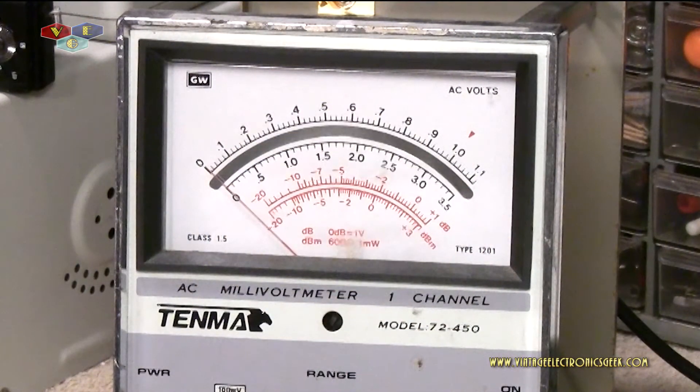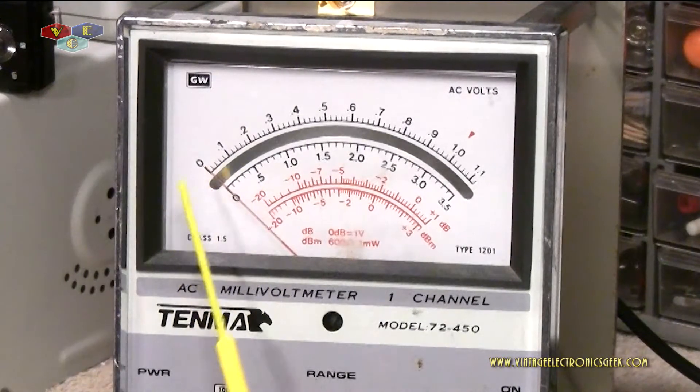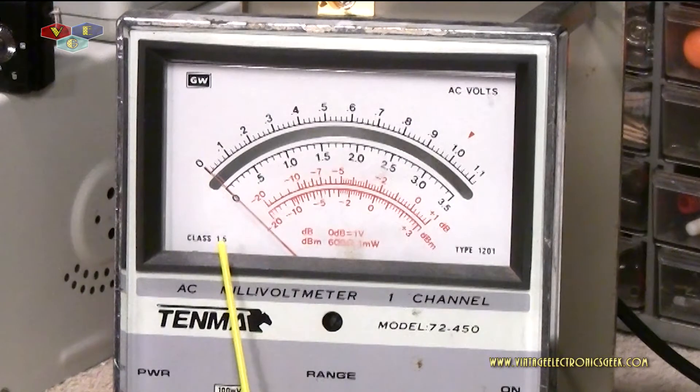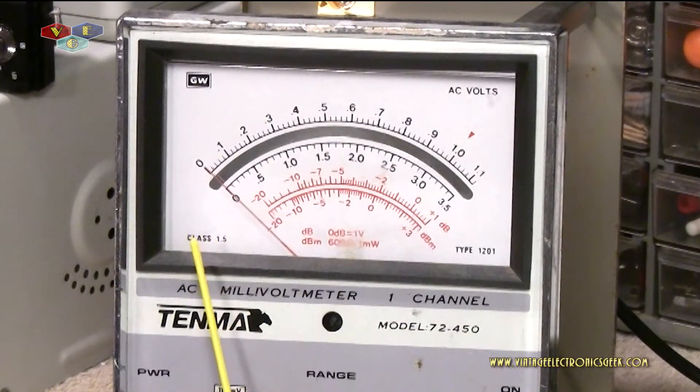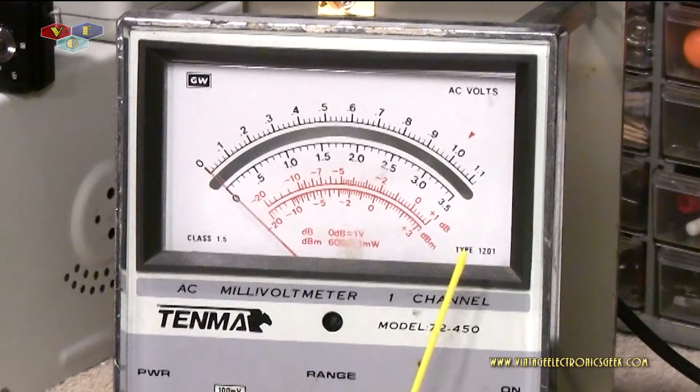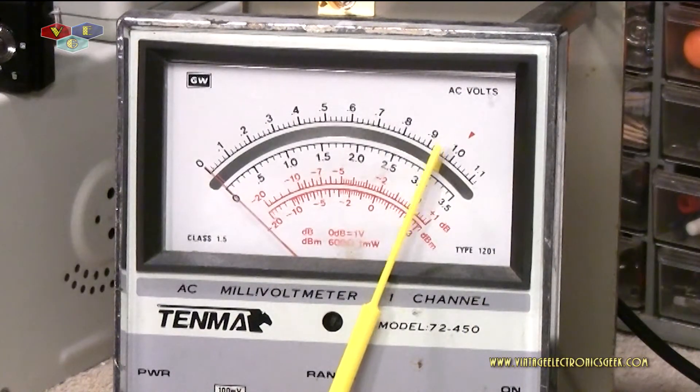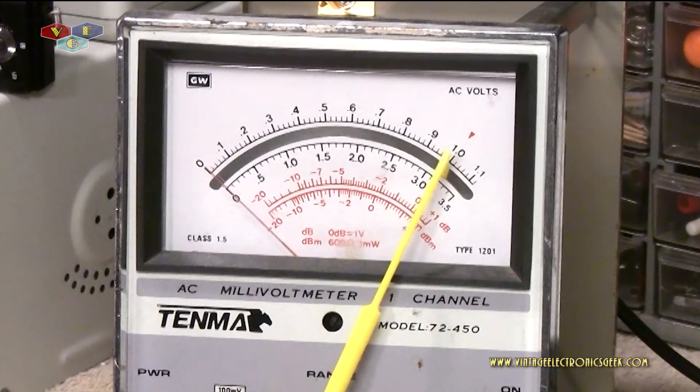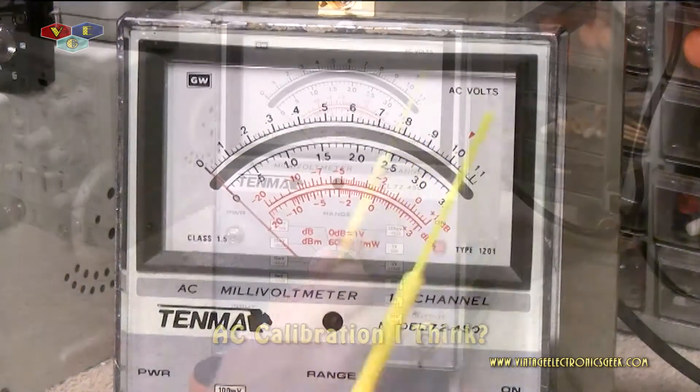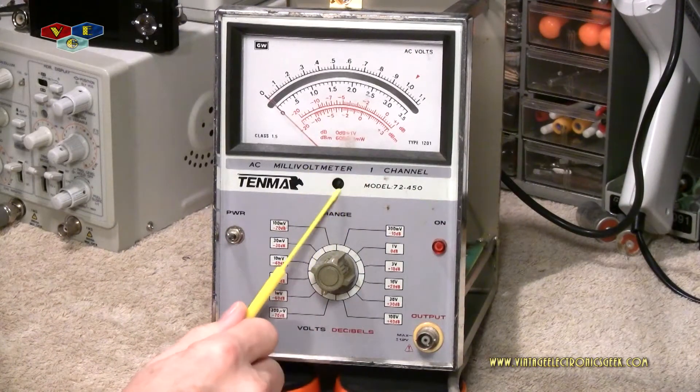On the front of the device we have our big meter. This is a Class 1.5 meter or I should say device. I don't know what that really represents, I do see a lot of meters like this that say Class 1.5, need to do research on that. Type 1201. There's a little tick mark right here on the meter, I have no idea what that represents.